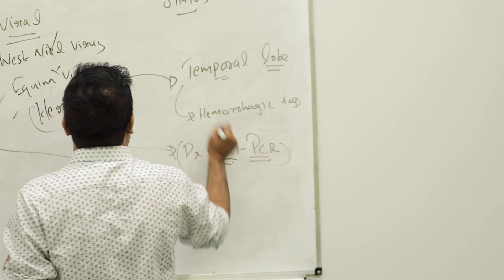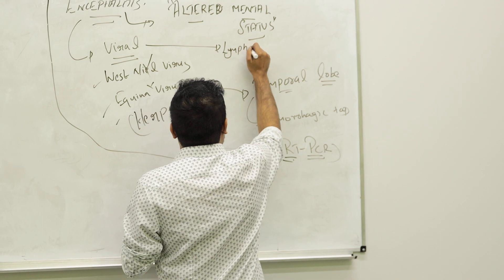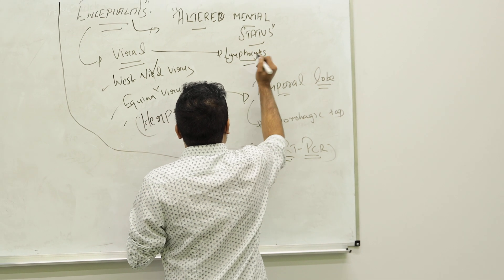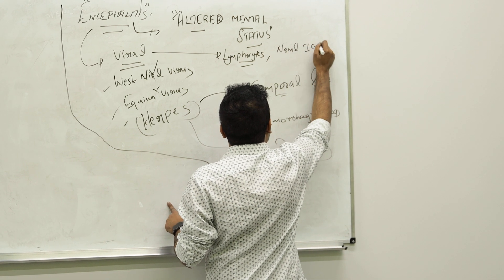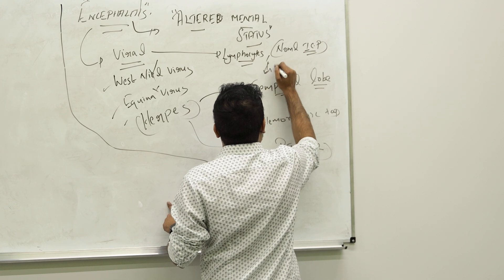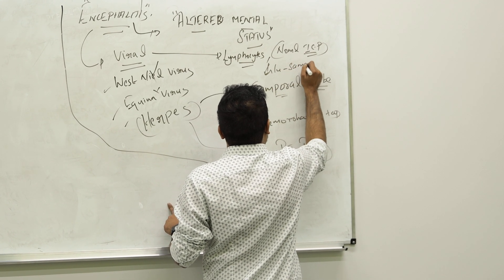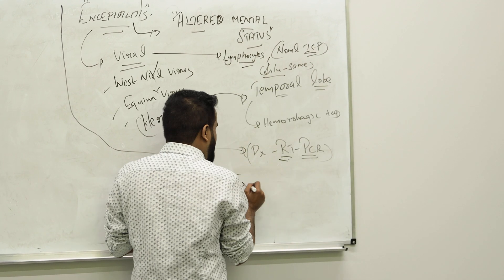So diagnosing, we do RT-PCR always in viral for sure. The WBC will be predominant lymphocytes here, but the CSF will be normal. Intracranial pressure will be around normal and glucose will be the same, not like in bacteria. There will be clear fluid in viral, no other problem.